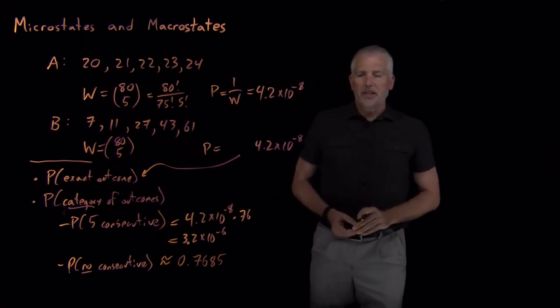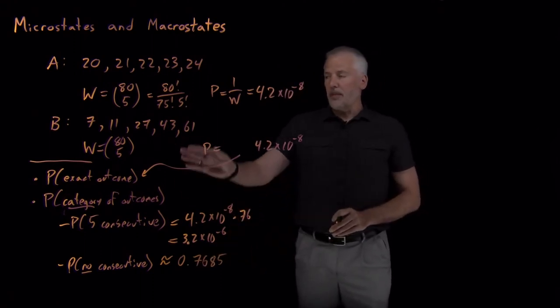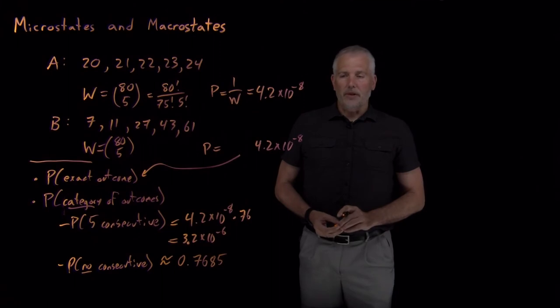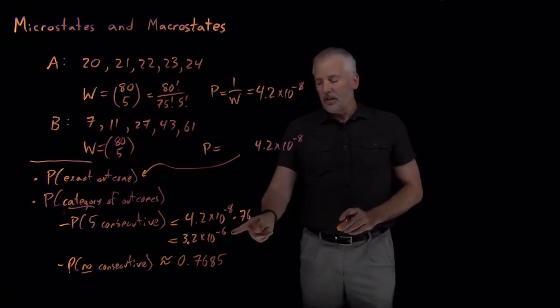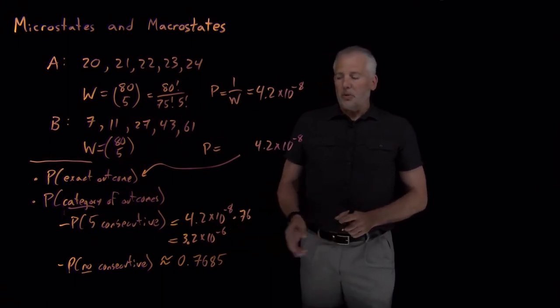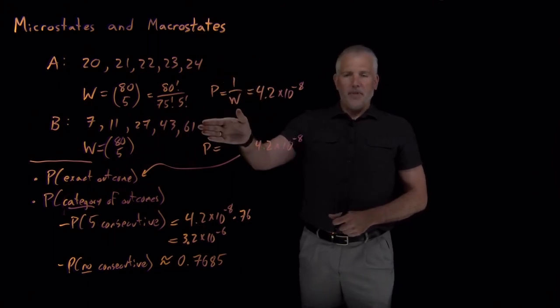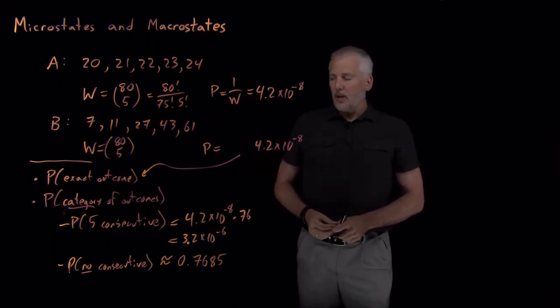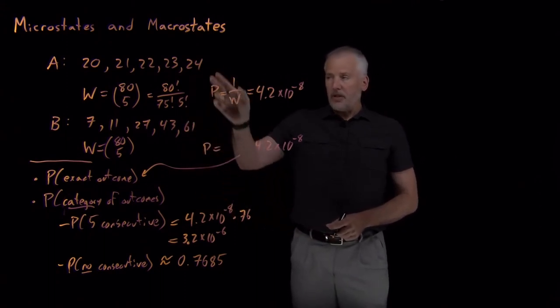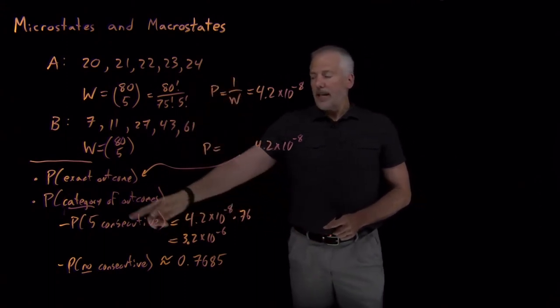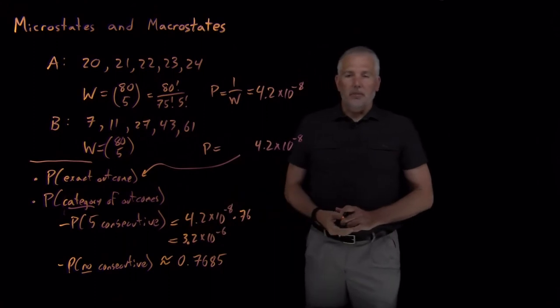So about 76% of the time, 77% of the time, the numbers won't have any consecutive numbers in there whatsoever. So these are the numbers that match your friend's intuition when he said that number, this sequence of numbers is very unlikely and this one seems very normal. He's not asking about the particular outcome but the category of outcomes of whether numbers are consecutive or not.